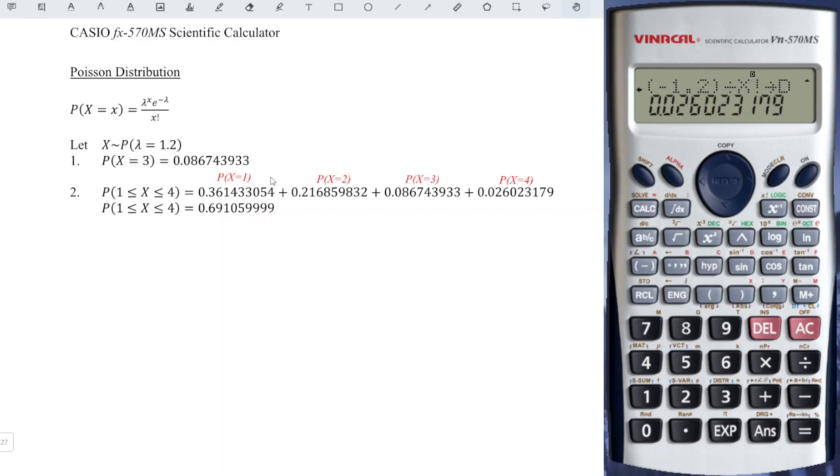So we already have A, B, C, D for 1, 2, 3, 4, respectively. So we press AC. Now we press alphabet button with A plus alphabet button with B plus alphabet button with C plus alphabet button with D. And if we press equal, then we will obtain the total probabilities that we are looking for.